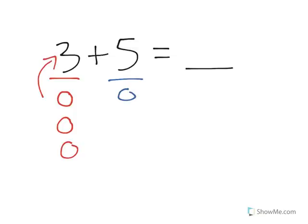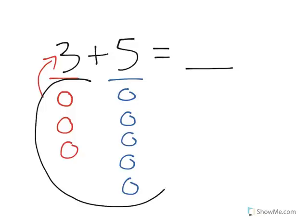And what we're going to do is we're going to add five more circles. So if we started with three circles and we added five circles, we want to know how many circles there are all together.